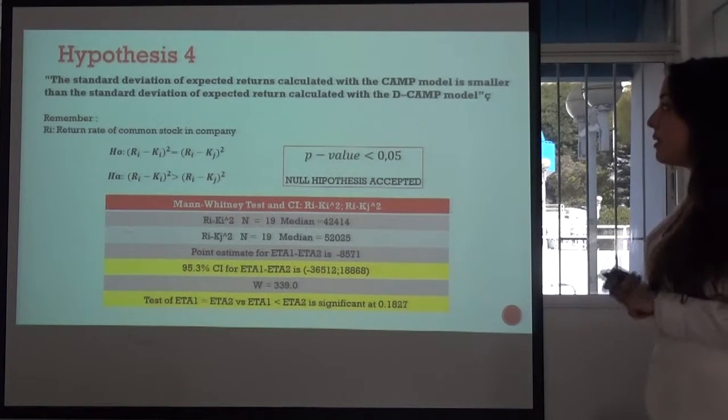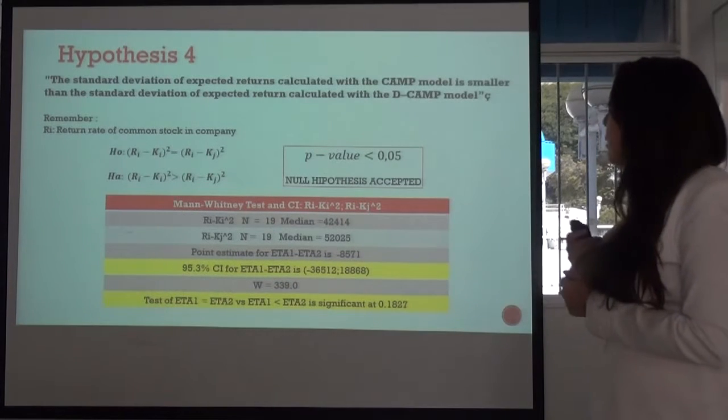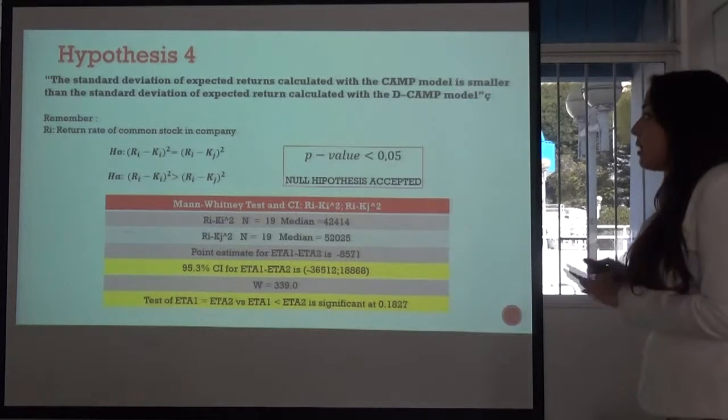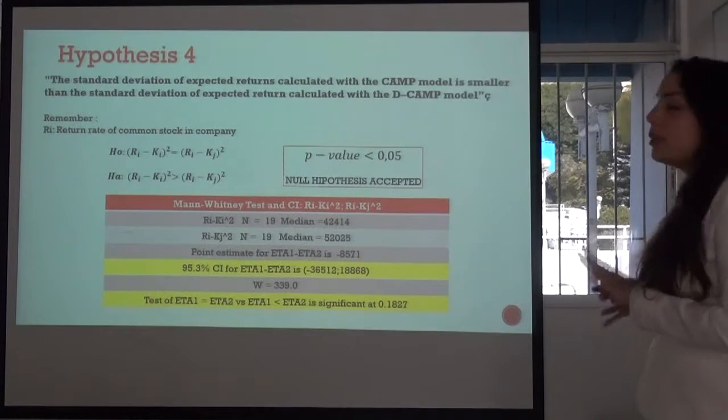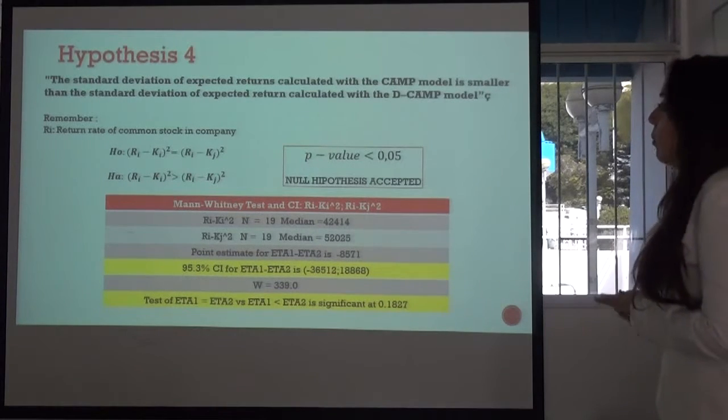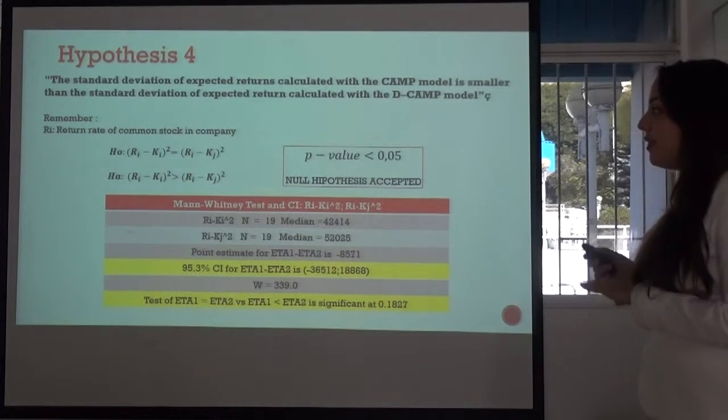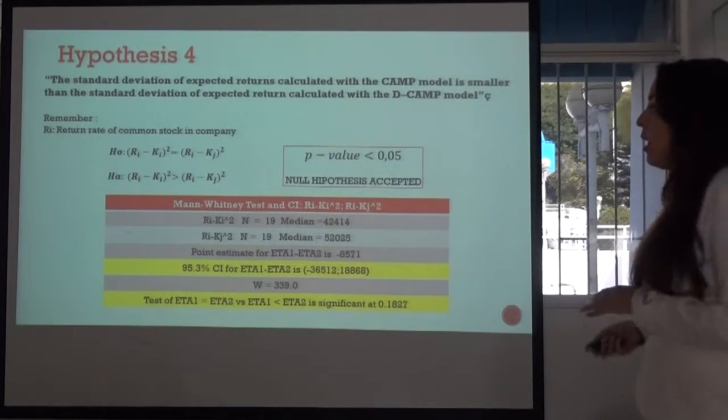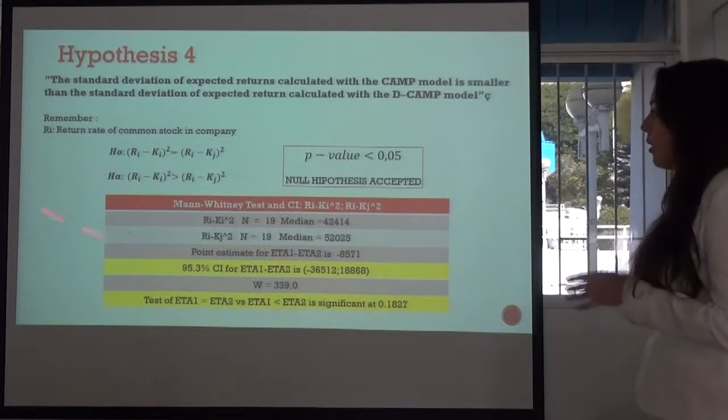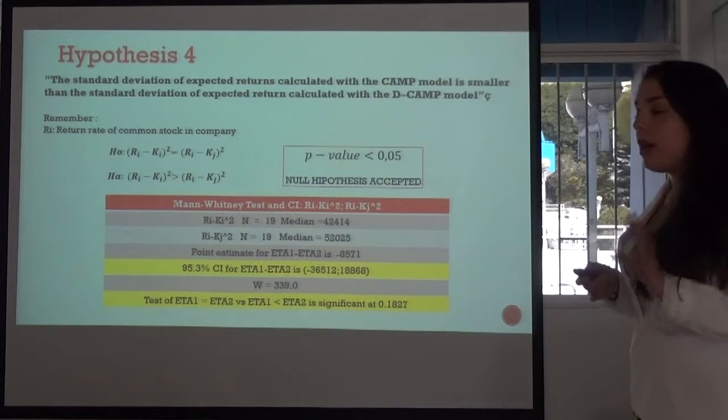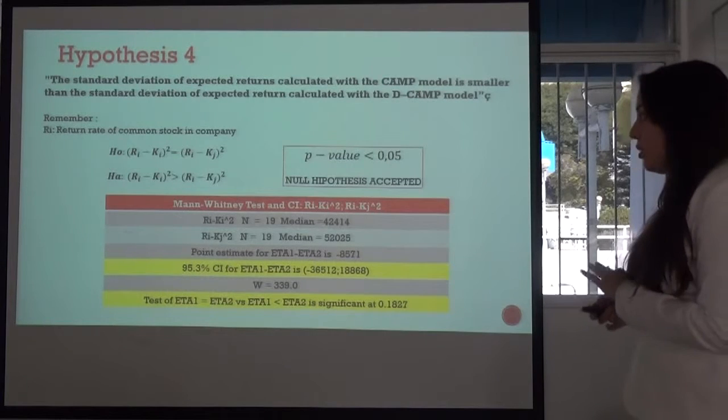Hypothesis four. The standard deviation of expected return calculated with CAPM model is smaller than the standard deviation of expected return calculated with DCAPM model. We have to remember that RI is the return rate of common stock in company. And this value was already calculated. And therefore,